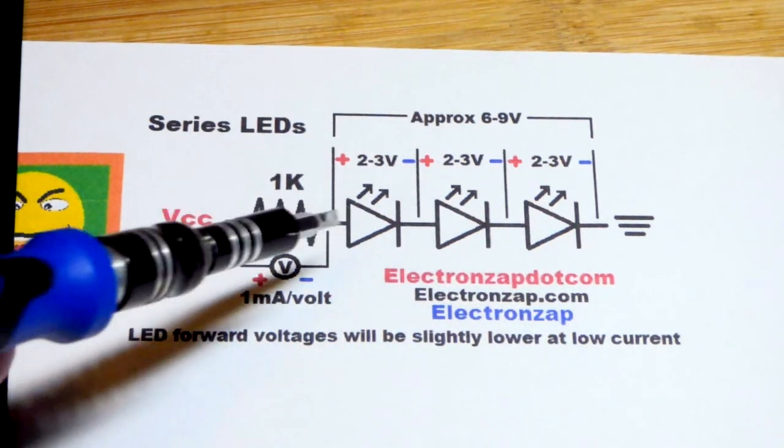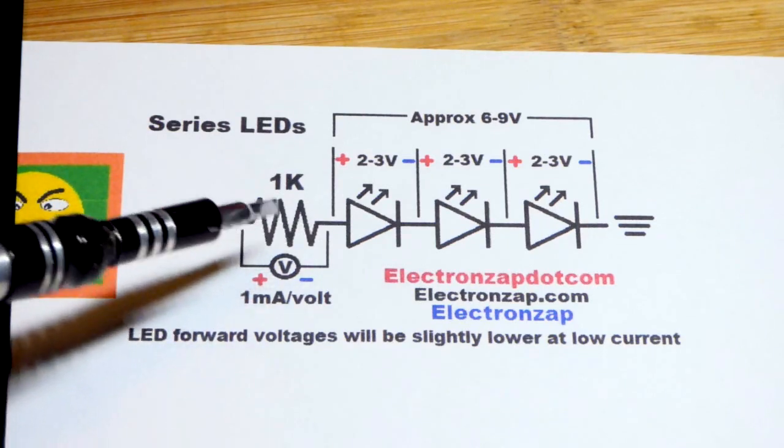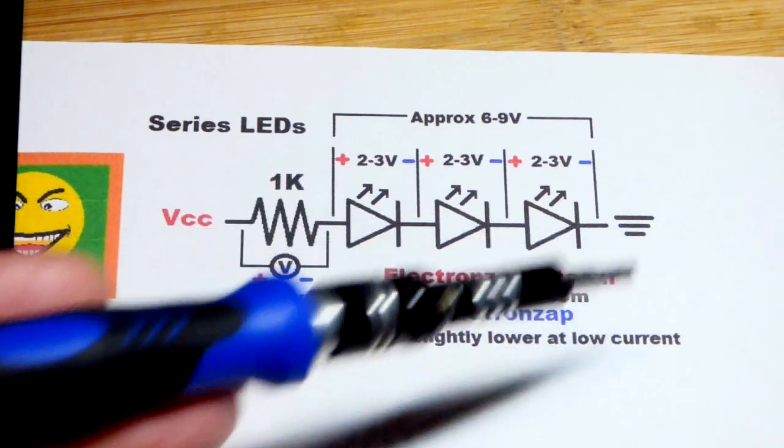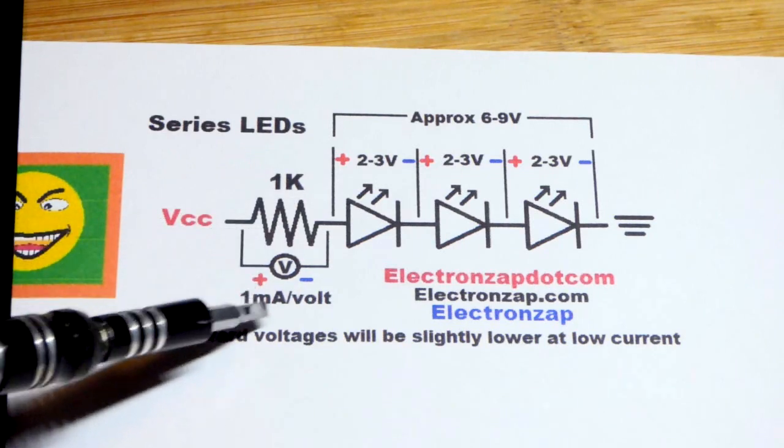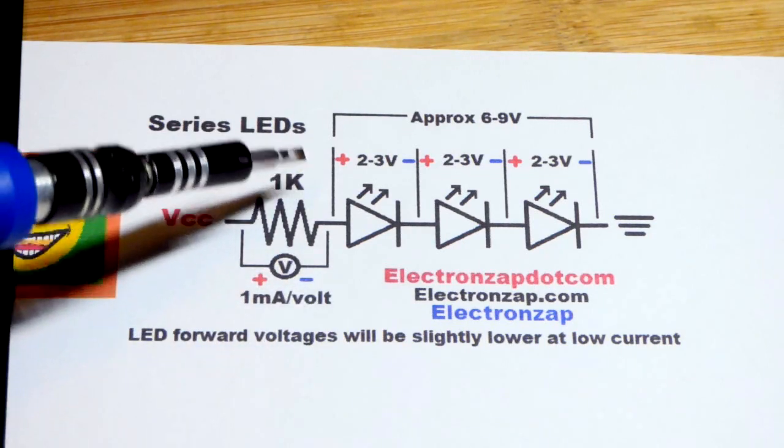And the rest of the voltage will go across your current limiting resistor. So otherwise current will flow through freely, they'll burn out. And so the voltage that's across, if it's a 1 kilohm resistor, 1000 ohms...